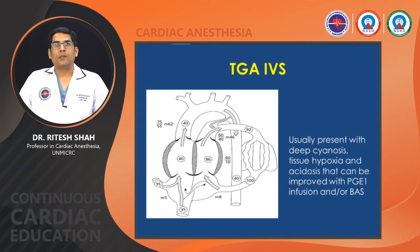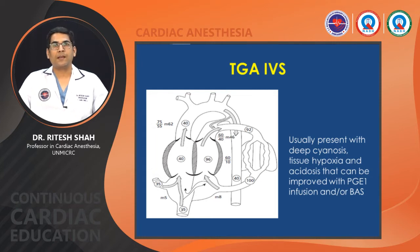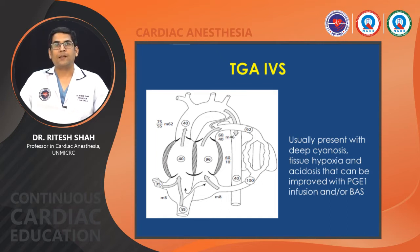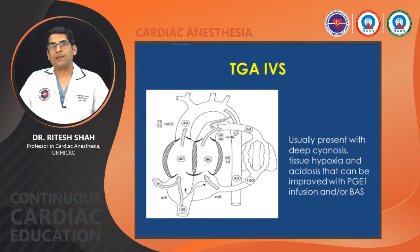Patients with TGA with intact ventricular septum usually present with deep cyanosis, tissue hypoxia, and acidosis. This can be improved with infusion of prostaglandin to keep the duct patent, and/or balloon atrial septostomy. Whenever these patients present, they typically require emergent management preoperatively as well as surgery as soon as possible.